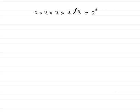What is the value of 2 to the power 5? Well, it's very common for people to make the mistake of thinking 2 to the power 5 is 10. That would be 2 plus 2 plus 2 plus 2 plus 2. No, this is 2 times 2 times 2 times 2 times 2, which comes to 32.